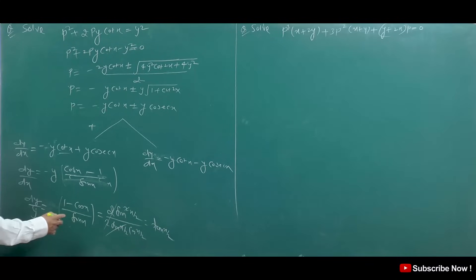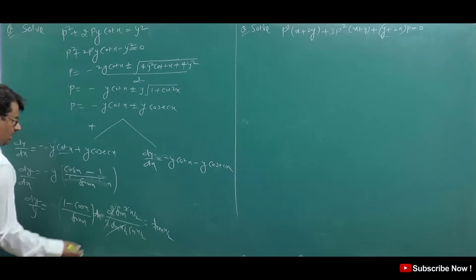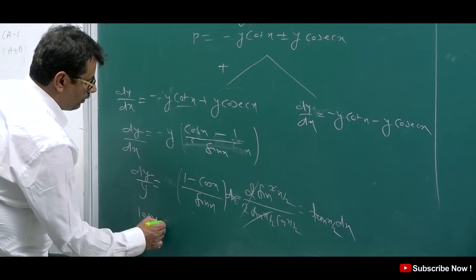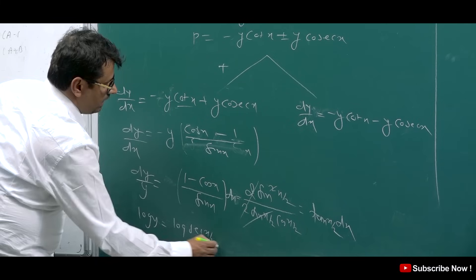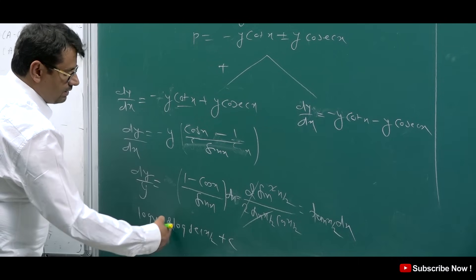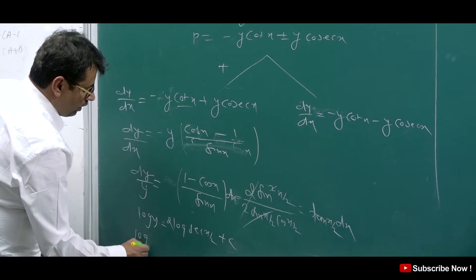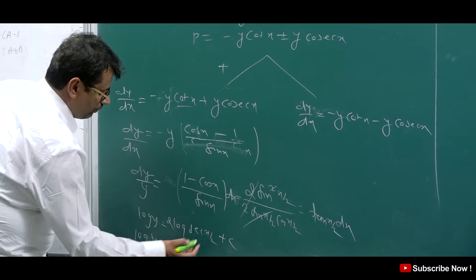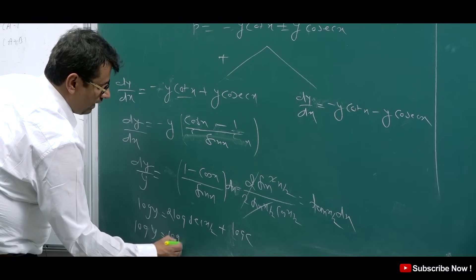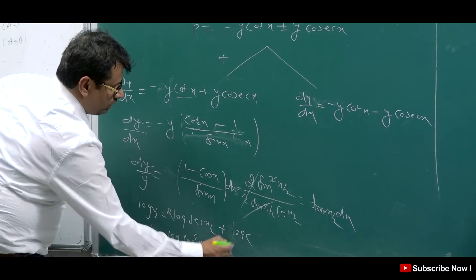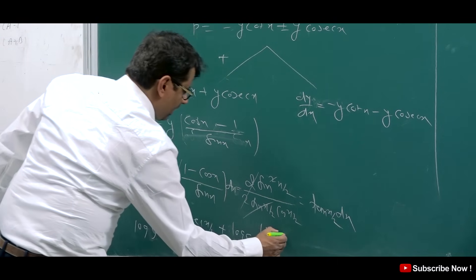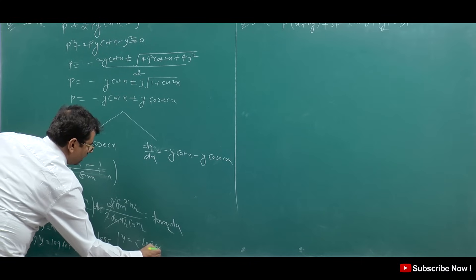Integrating: log y = 2·log|cos(x/2)| + log C, taking the constant as log C. This gives log y = log[C·cos²(x/2)]. So the first solution is y = C·cos²(x/2), or equivalently y = C·sec²(x/2) (adjusting the constant).